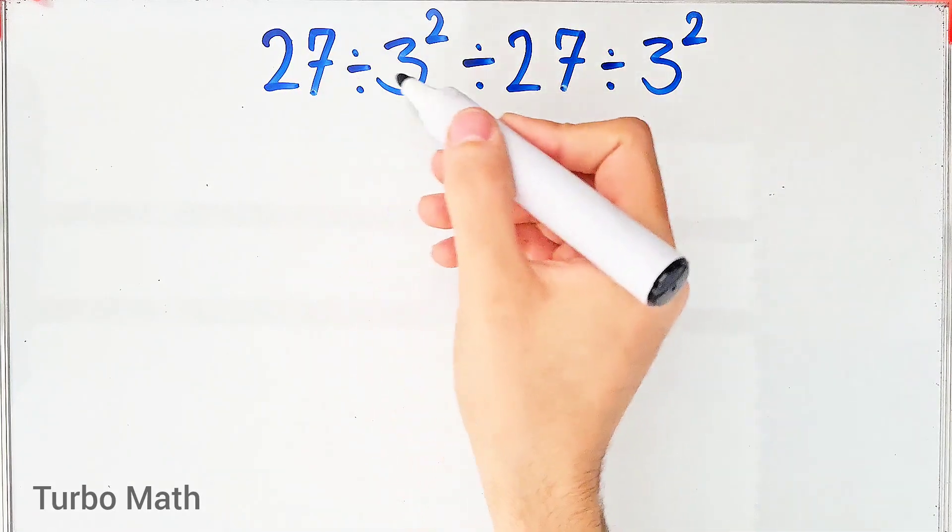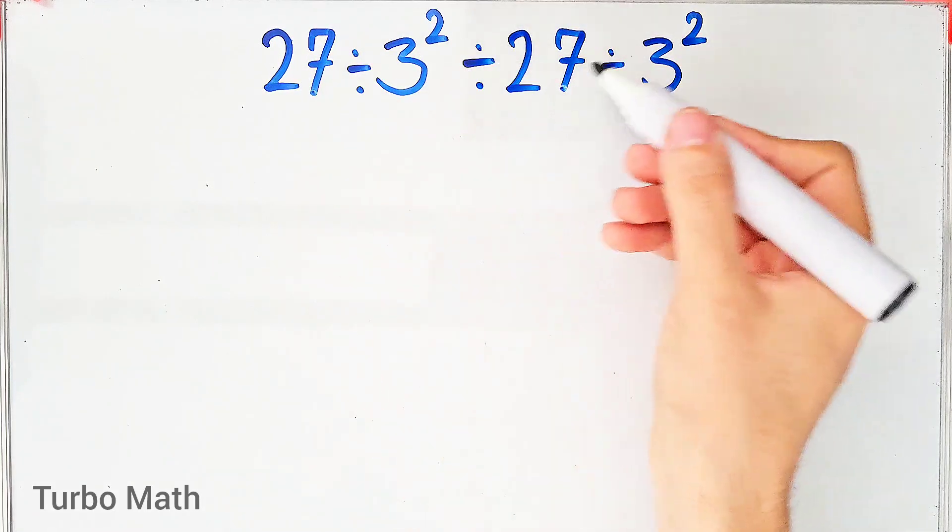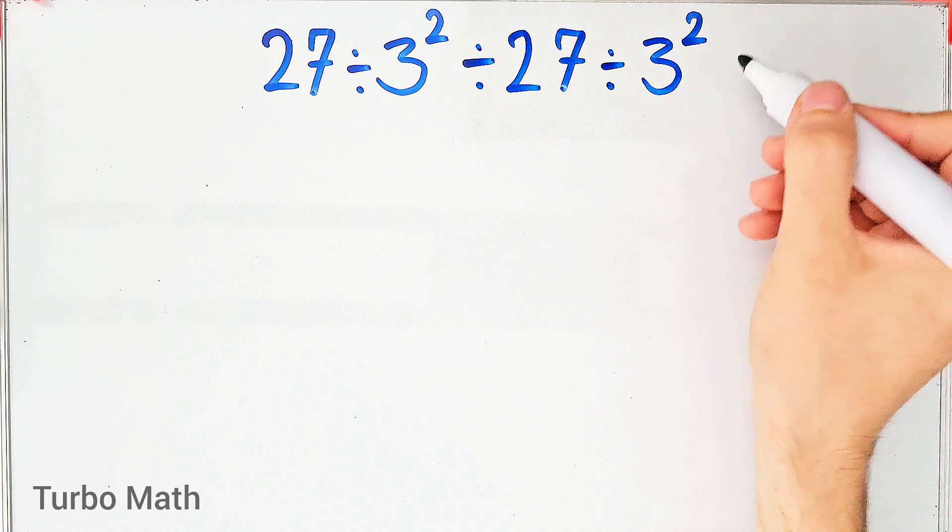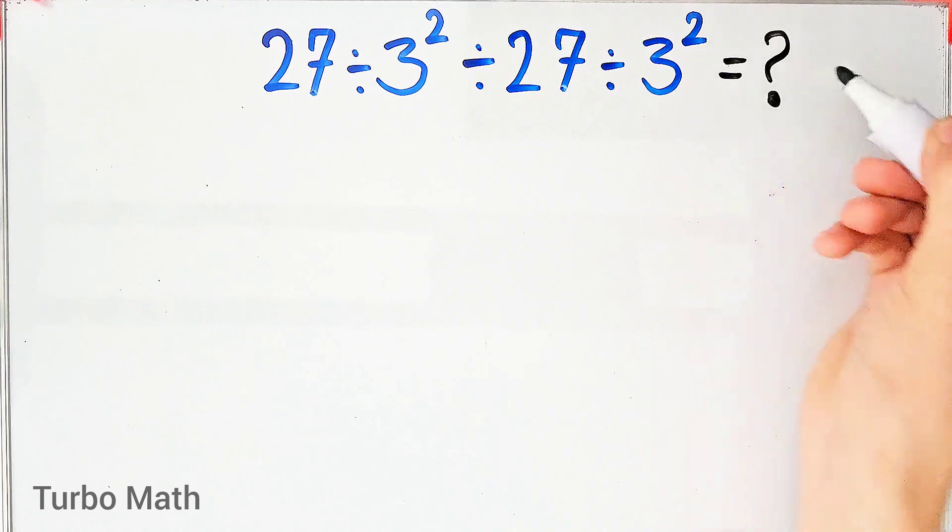27 divided by 3 to the power of 2, divided by 27, then divided by 3 to the power of 2. What is the answer to this question? Can you solve it?